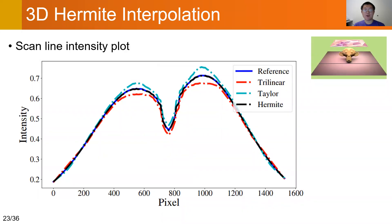In this example, we compare those three interpolation methods in real rendering. On the left, we show a pixel intensity plot along a scan line in the image.